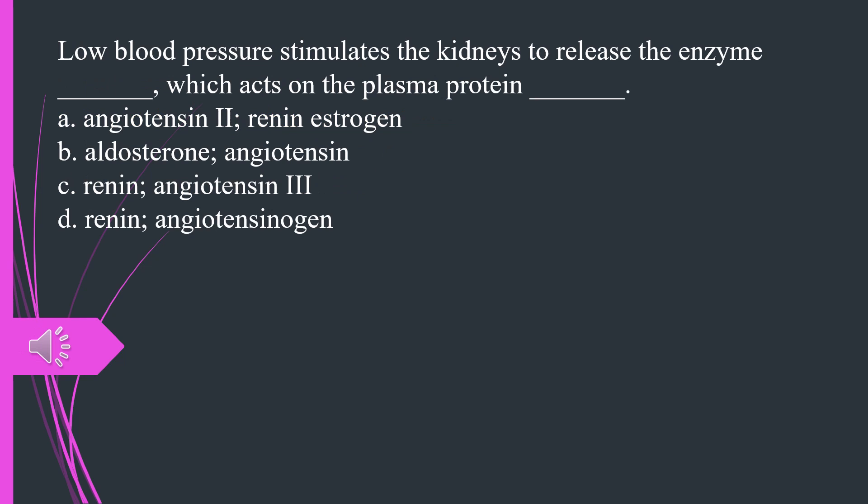Low blood pressure stimulates the kidneys to release the enzyme, which acts on the plasma protein. A. Angiotensin 2, renin estrogen B. Aldosterone, angiotensin C. Renin, angiotensin 3 D. Renin, angiotensinogen. The answer is D, renin, angiotensinogen.